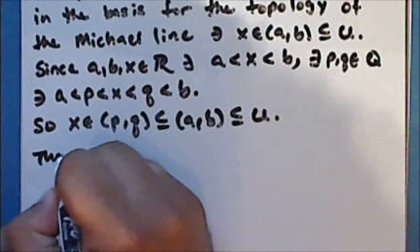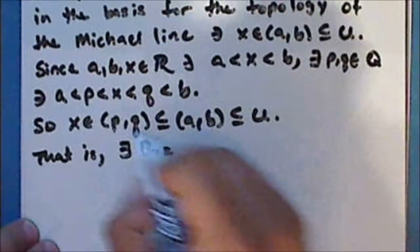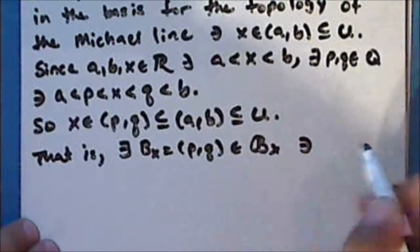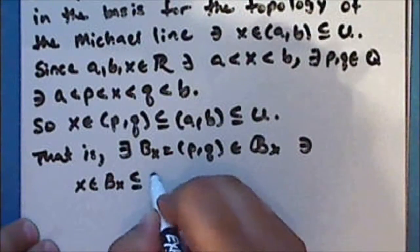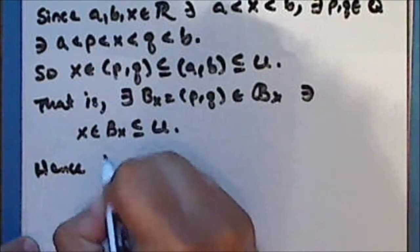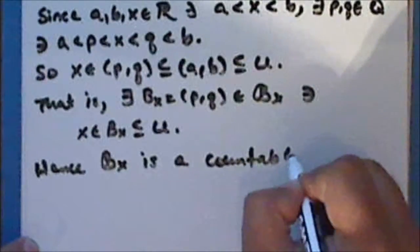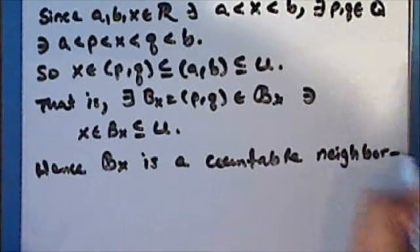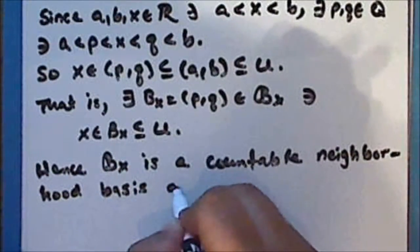Hence, the collection ℬ_x is countable. That is, there exists an element — the open interval from p to q — in the collection ℬ_x, such that x is in this element, which is a subset of u. Hence, ℬ_x is a countable neighborhood basis at the point x.